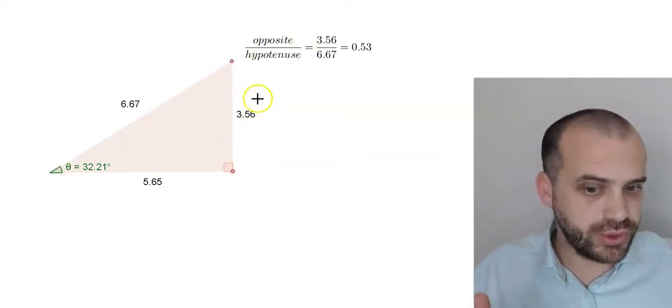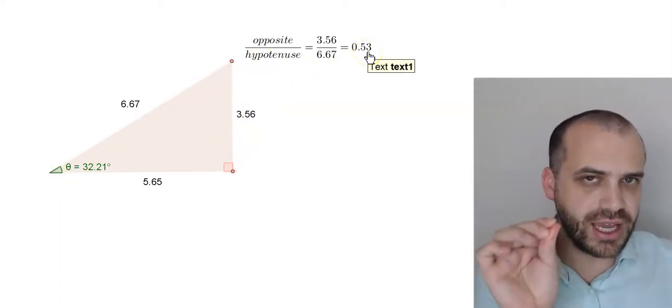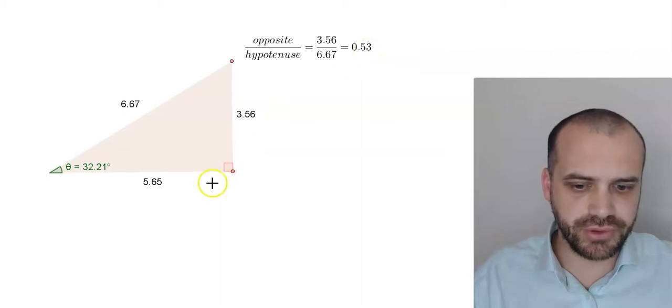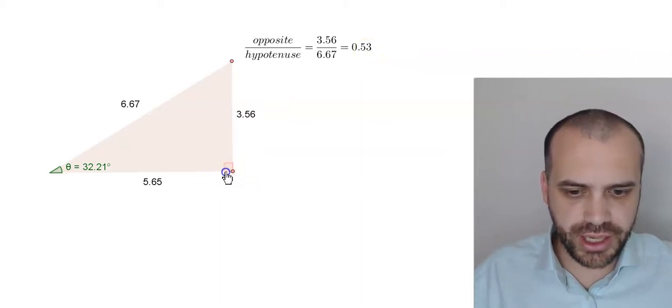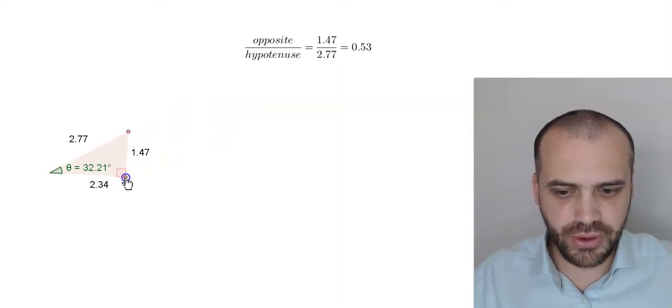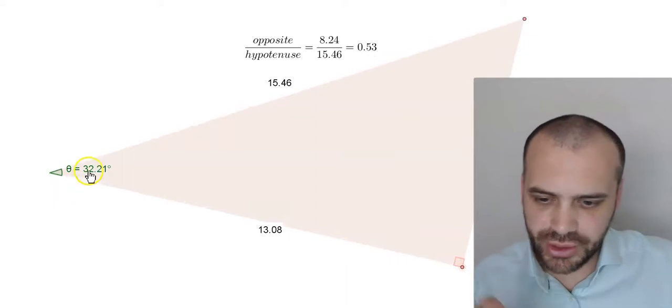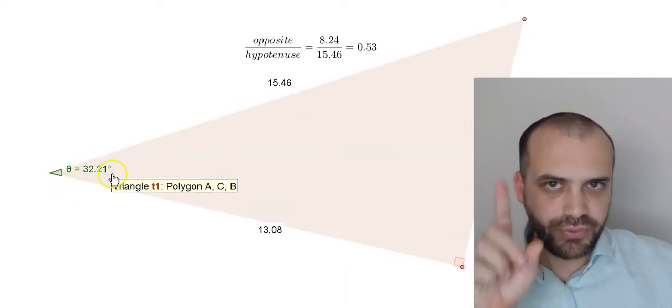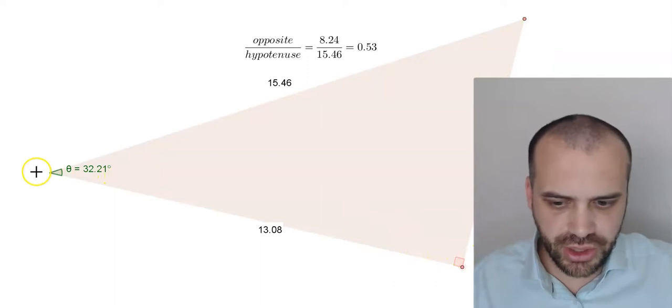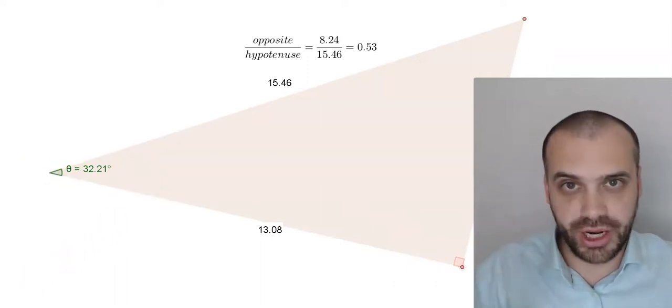But when we do 3.56 divided by 6.67 we still have that same value 0.53. Now you can see that it doesn't matter how small I make this triangle or how large I make this triangle. As long as this angle stays the same, the ratio between this side and this side will be the same. We call that the sine ratio.